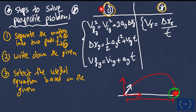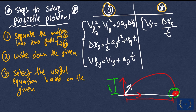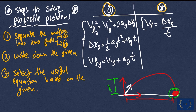It depends on the question and what is given to you. The first key step is always to separate the motion into x and y and write down the givens. Then select which equation to use to find the unknowns. For example, they might give you the maximum height reached and ask for the final velocity at the top — which is zero in the y direction, while vx remains constant. Or they might give you a specific height h and ask for the velocity at that point. There are multiple ways a question can be formed, but the same steps always apply.